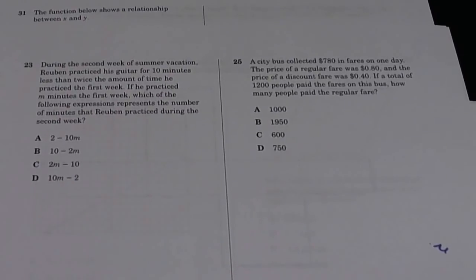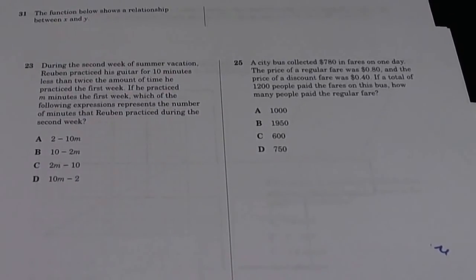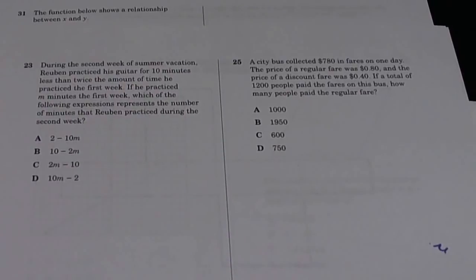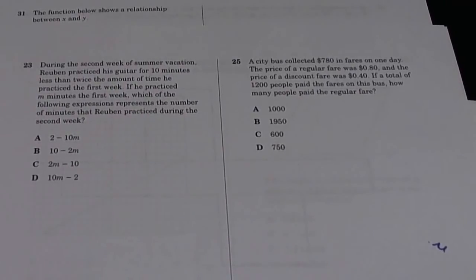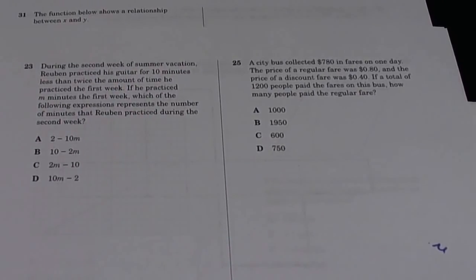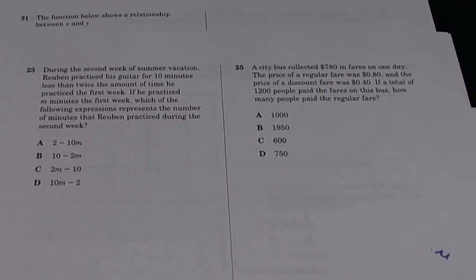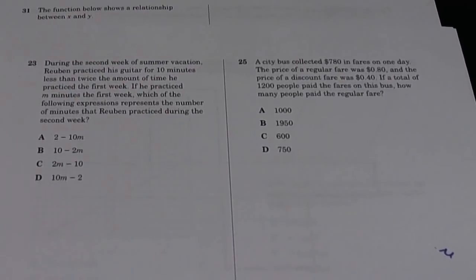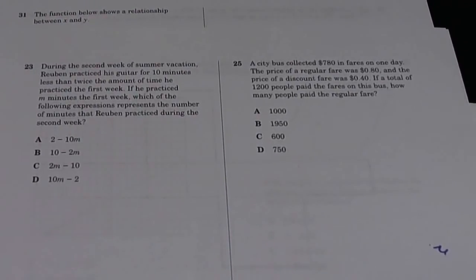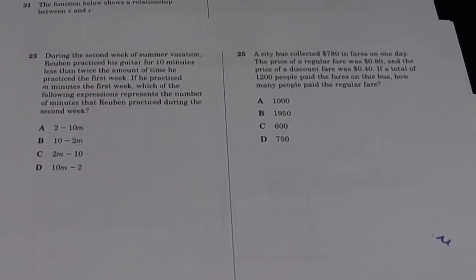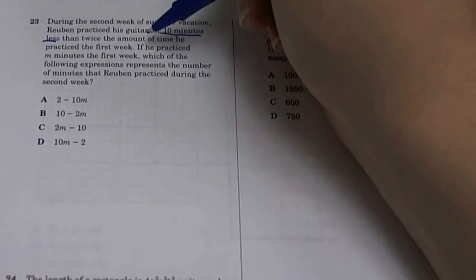During the second week of summer vacation, Ruben practiced the guitar for 10 minutes less than twice the amount of time he practiced the first week. He practiced N minutes the first week. Which of the following expression represents the number of minutes that Ruben practiced during the second week? So let's read it again. Ruben practices his guitar for 10 minutes less, so 10 minutes less means we're going to be subtracting than twice the amount of time he practiced the first week.